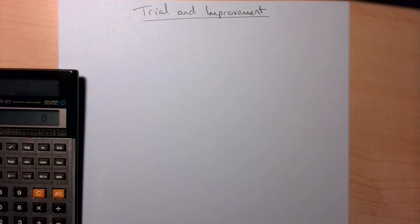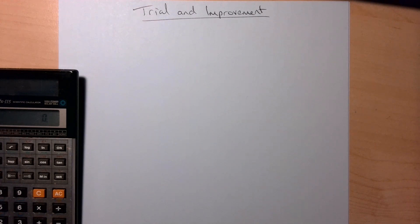I'm going to show you how to solve equations using the trial and improvement method. You may have heard of trial and improvement, or certainly trial and error, but we like to call it trial and improvement — it's a bit more positive. We use this method when we're solving more difficult equations, or when the answer might not be a whole number.